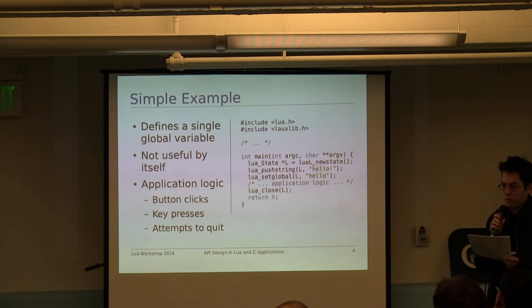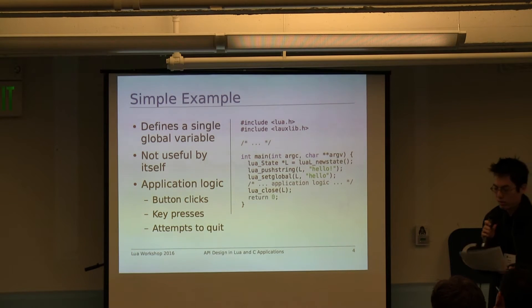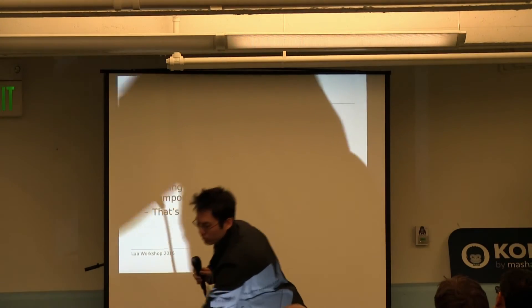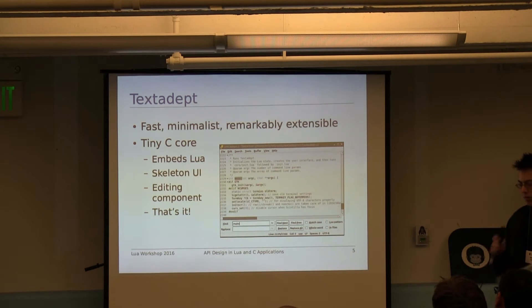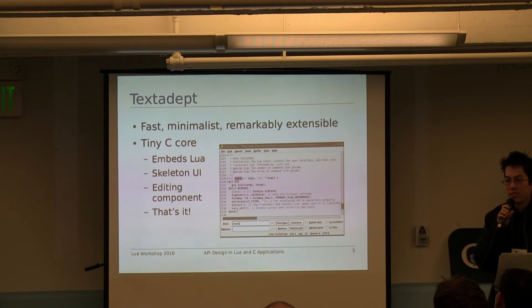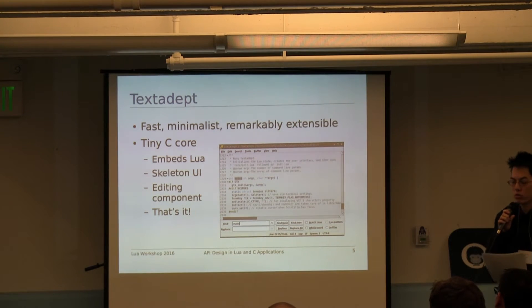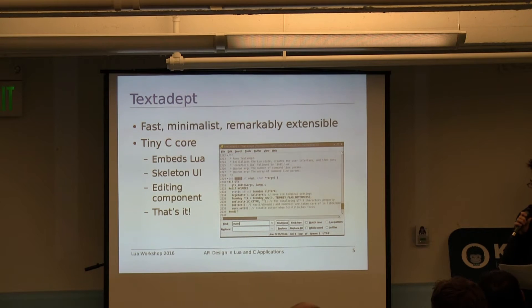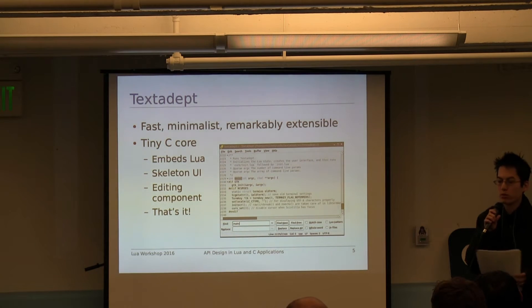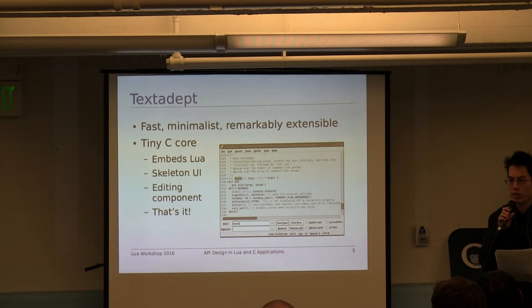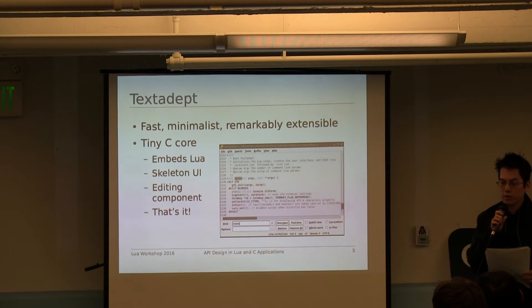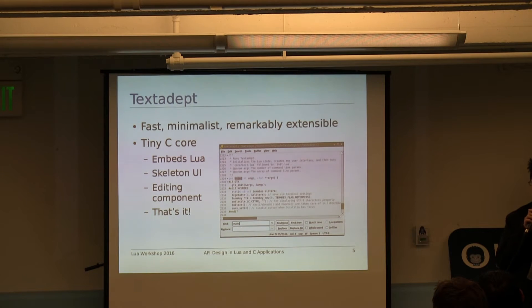Now I'm going to consider TextAdept as an example so that we can get some concrete ideas to work with. TextAdept is a fast, minimalist, and remarkably extensible text editor. When I designed it nine years ago, I wanted a tiny, minimal C core that embeds Lua and has a very bare-bones user interface that Lua can take advantage of. Using this skeleton of a C program, my plan was to have Lua fill in all of the gaps and provide the remainder of the editing experience — everything from opening and saving files to handling key bindings to performing find and replace. TextAdept was designed from the very beginning to be extensible and all of the actual features came later.